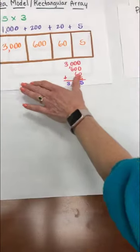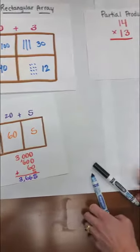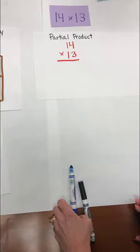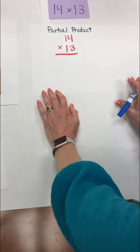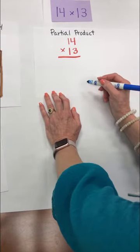Alright so now we're going to go back to our original problem. 14 times 13 and now we're going to show this in partial product form. Because remember we're not teaching the standard algorithm in fourth grade. So here we go.